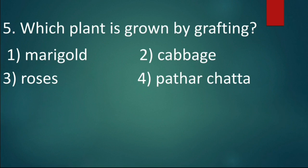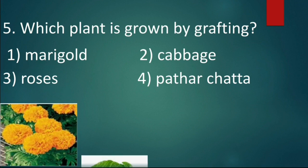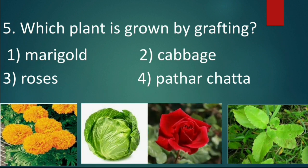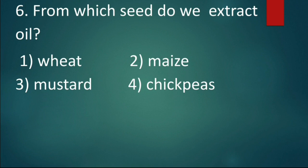Question number five: Which plant is grown by grafting? Option one: marigold. Option two: cabbage. Option three: roses. Option four: Patharchatta. Dear students, marigold, cabbage, and Patharchatta are not grown by grafting. Hence option three, roses, are the plants grown by grafting. The answer is option three: roses.